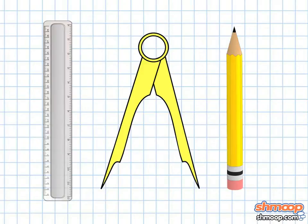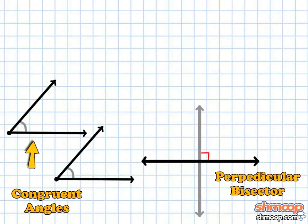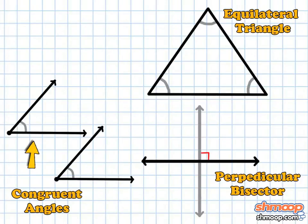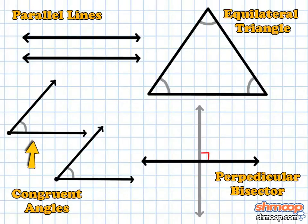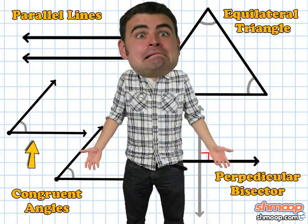Using only these three tools, we can construct practically anything: a perpendicular bisector, a congruent angle, an equilateral triangle, or parallel lines. But what good is all this talk of construction if we can't do anything with it?